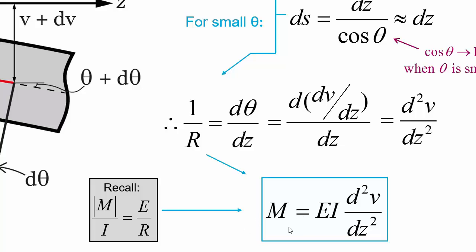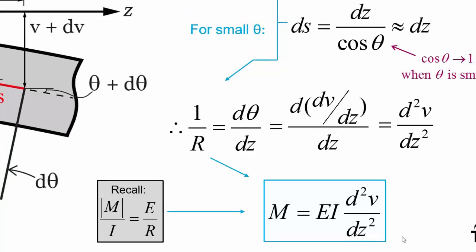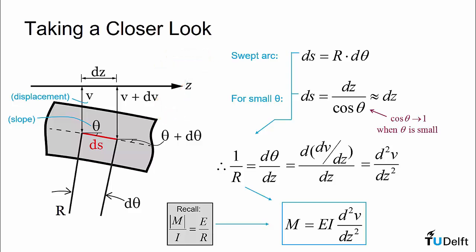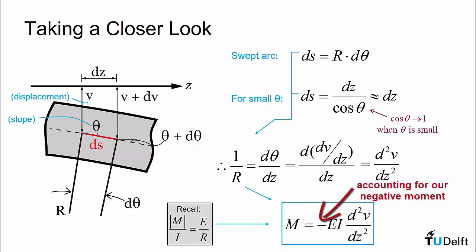As a result, we have to look at our final equation here and assess what effect the sign of the moment will have. The deformation, slope, and rate of change of slope in our figure here is all in the positive direction according to our coordinate system. But the deformation is the result of a negative moment. Thus, we need to add a negative sign to our final equation to reflect this.